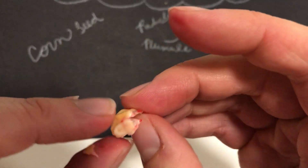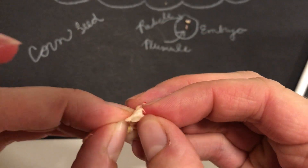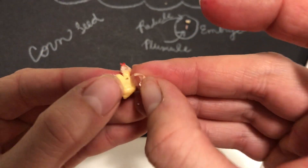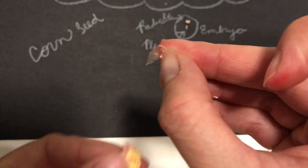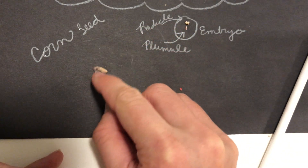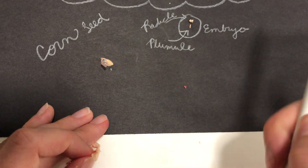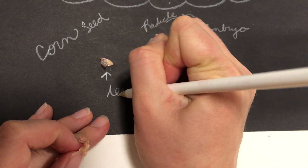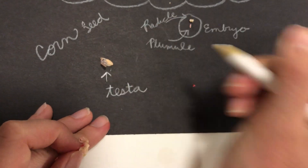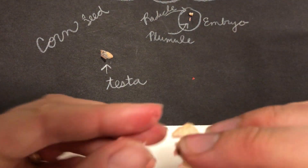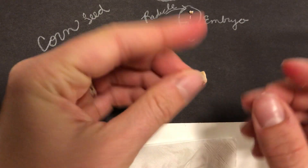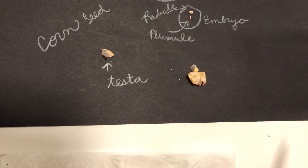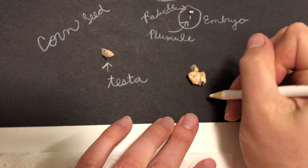You see the outside coating of this one did not come off as nicely as the other one, but you can tell it's kind of peeling off. I did my best. This is the testa from the corn seed — the testa, or the seed covering. And then this right here, with the testa still attached to most of it, is the cotyledon.